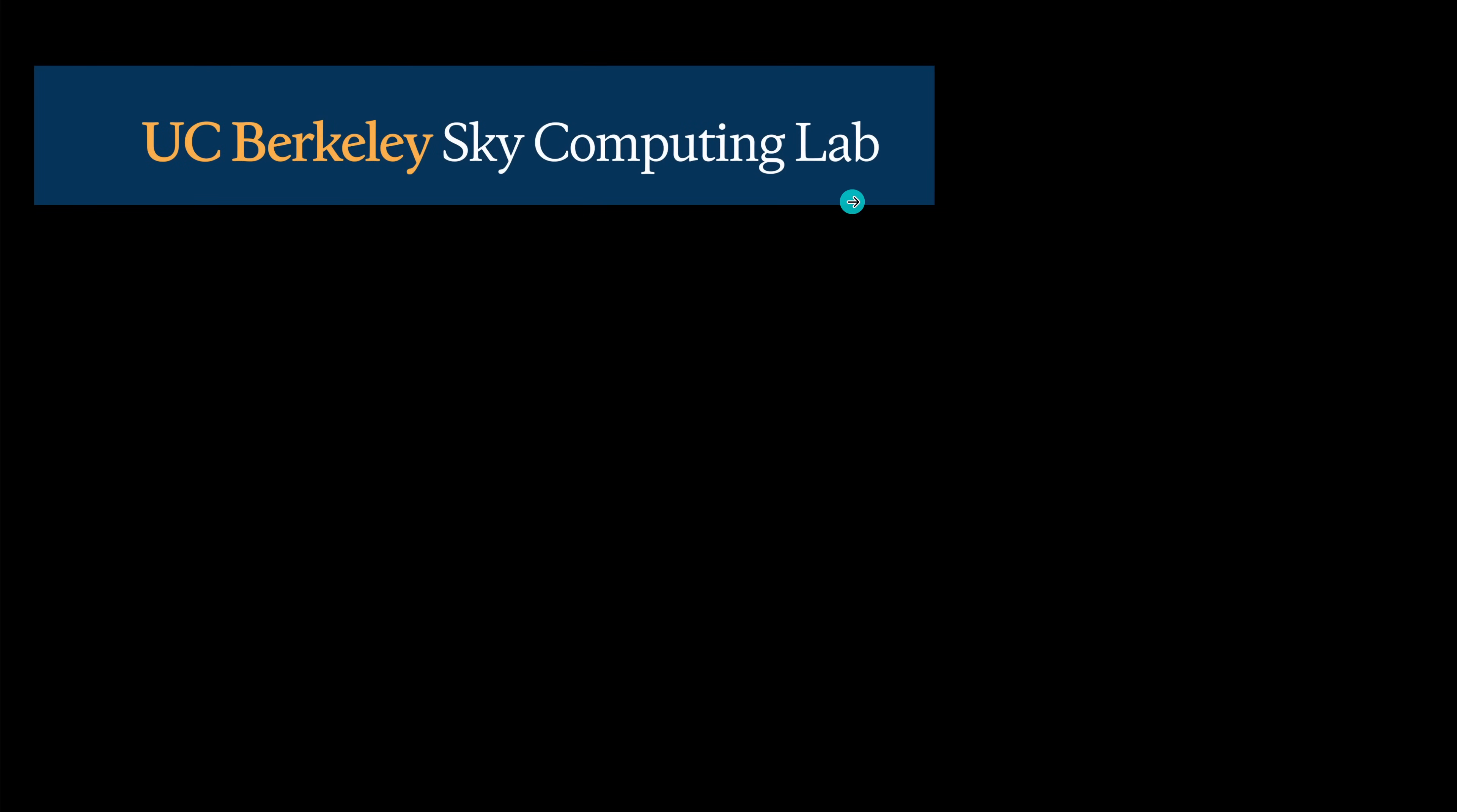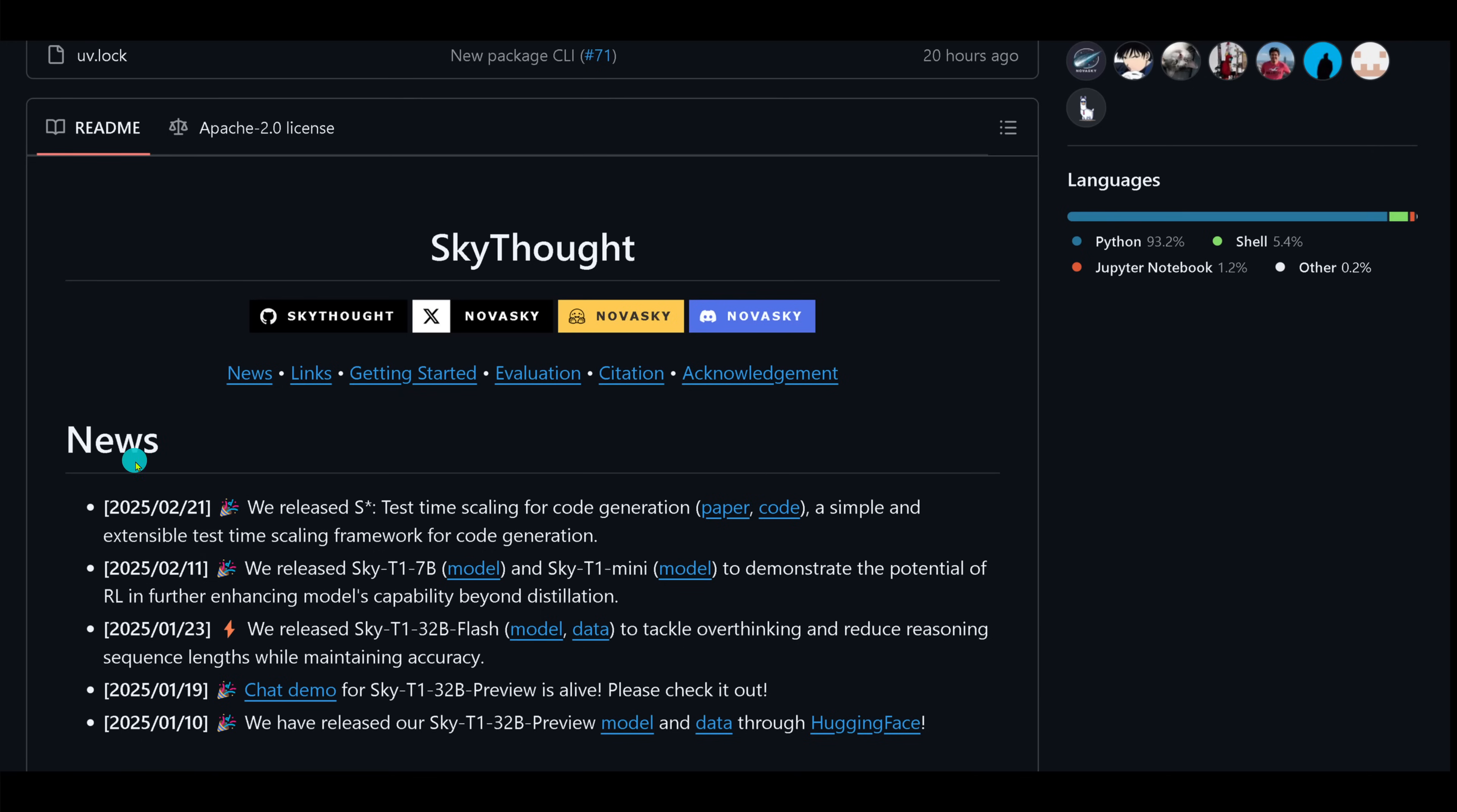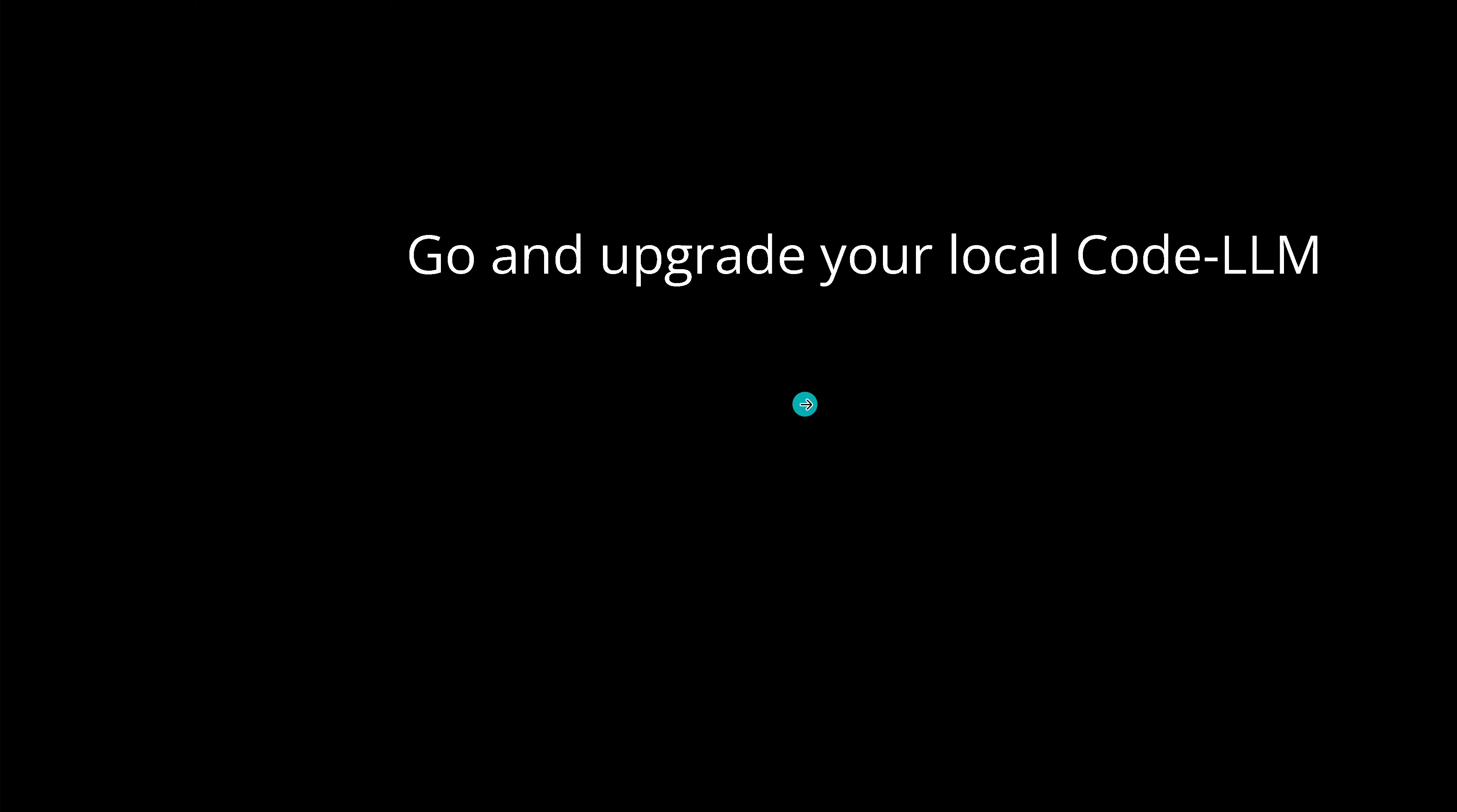For the team, you see Berkeley Sky Computing Lab, real nice. You have the older people, the faculty, the core faculty, the professors and associated professors. Then you could scroll down two or three times to see all the students. Amazing team, great code. If you look back, Apache 2 license, so it is for you.